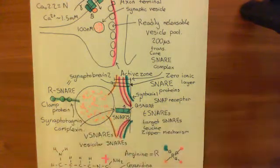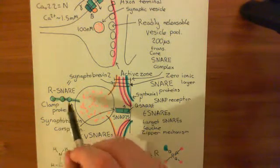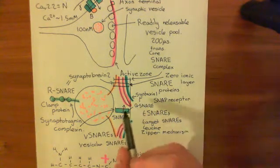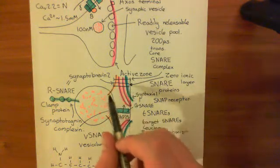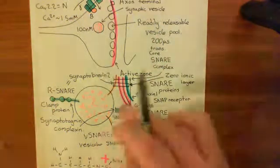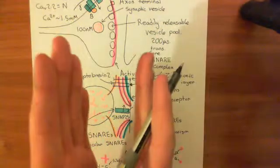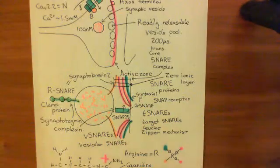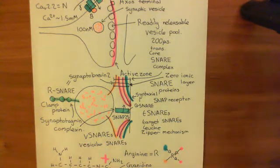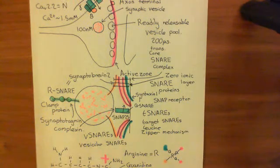When calcium goes up, calcium binds to synaptotagmin and activates it. Synaptotagmin then moves the complexin clamp protein out of the way. The stalled zippering mechanism of the core SNARE complexes resumes, zipping right the way down to the roots, bringing the two membranes very close together. When those membranes are brought close enough together, they fuse and release the neurotransmitter contents of the synaptic vesicle into the synaptic cleft. That's how fusion of the vesicle with the plasma membrane occurs upon an action potential arriving at the axon terminal.